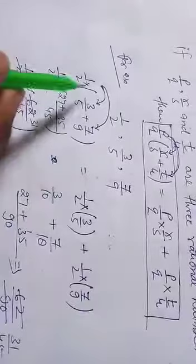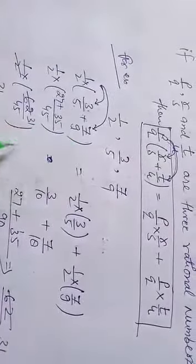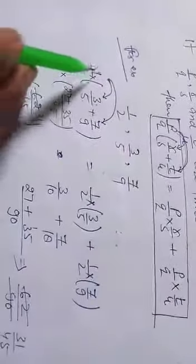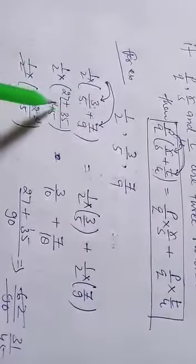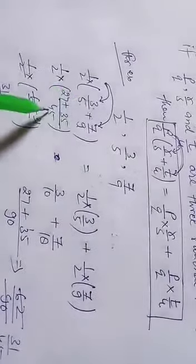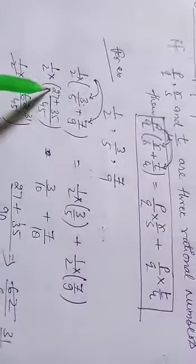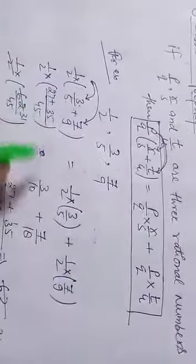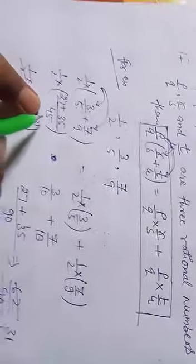First, we solve 1 by 2 bracket 3 by 5 plus 7 by 9 directly. We keep 1 by 2 as it is. For these two numbers, we find the LCM. The LCM of 5 and 9 is 45.